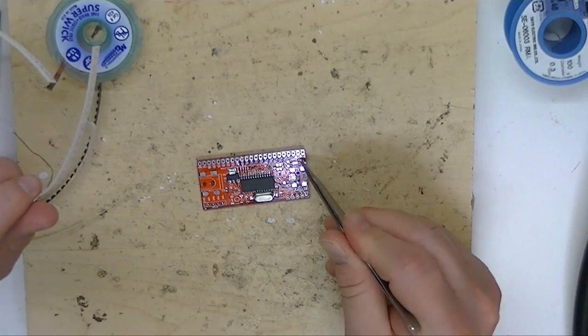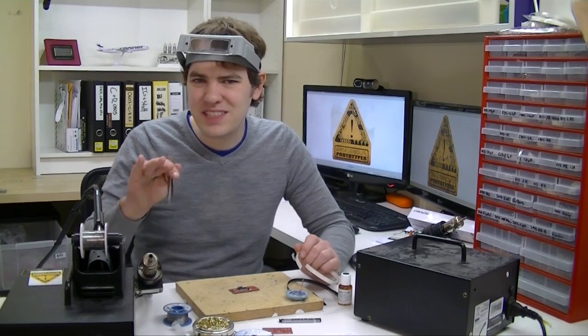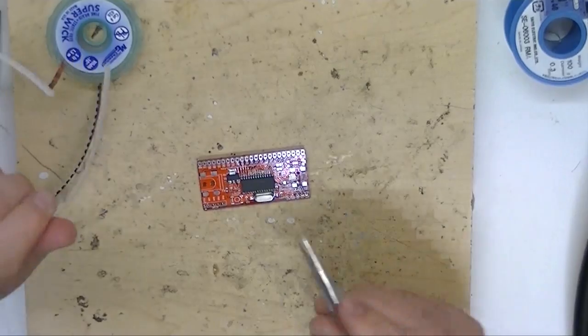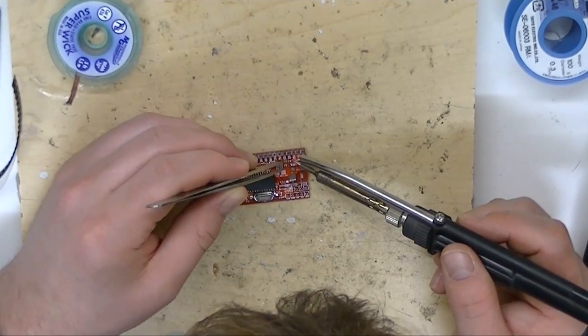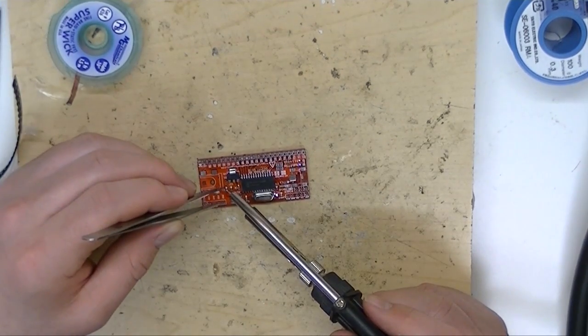We've also got two indicator lights. And those each need a current limiting resistor. Probably 2 to 5K is a better range. But on a prototype like this we don't mind the LEDs being dim. So we'll just use 10K resistors to make it quicker.